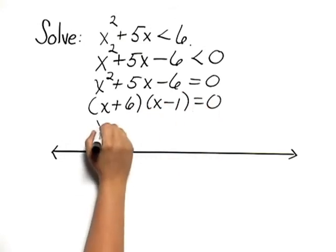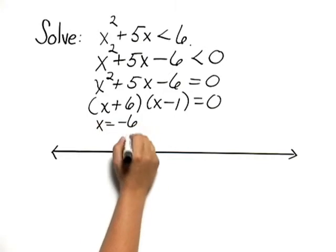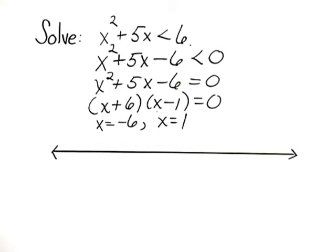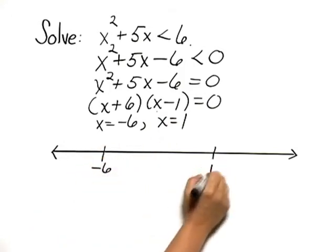x plus 6 is 0 when x equals negative 6. x minus 1 is 0 when x equals 1. We use these values, negative 6 and 1,